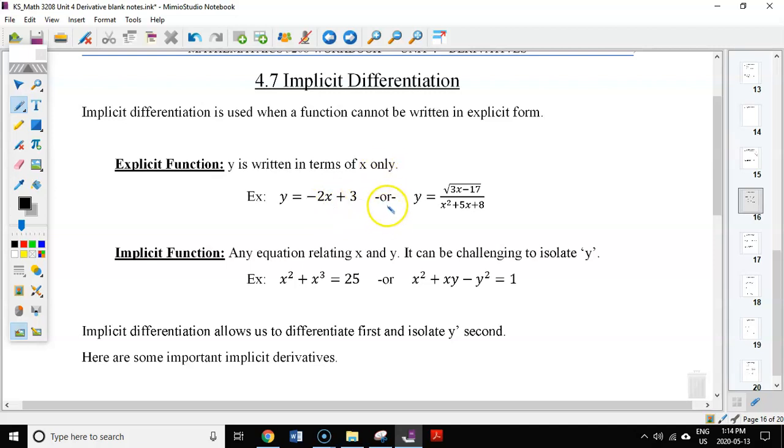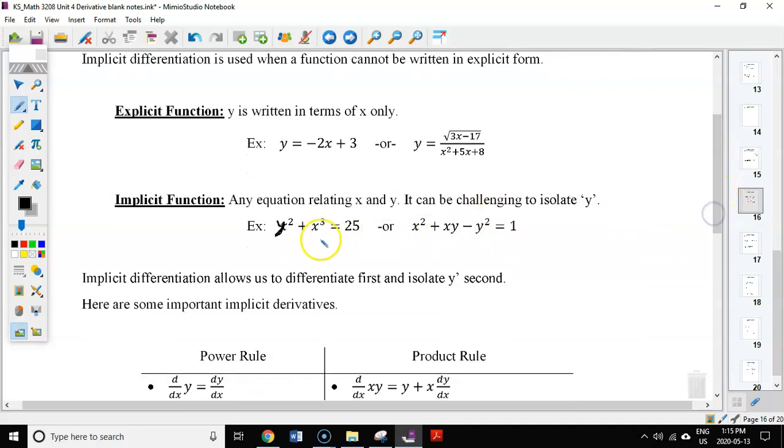Implicit functions, however, are not rearranged for y. If you look at both of these, we've got y squared plus x cubed equals 25, or x squared plus xy minus y squared equals 1. For both of these examples, it's challenging to isolate y, more so the second one than the first one. Because in the first one, we could move over x cubed and square root. And we've got y isolated, but there's a positive square root and a negative square root, so you have to be careful there.